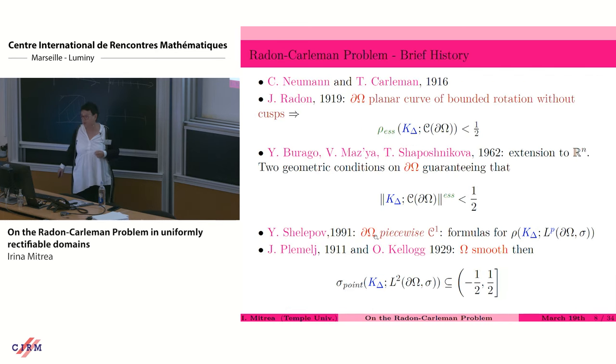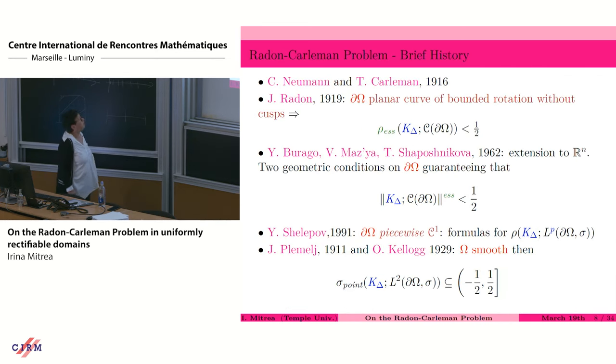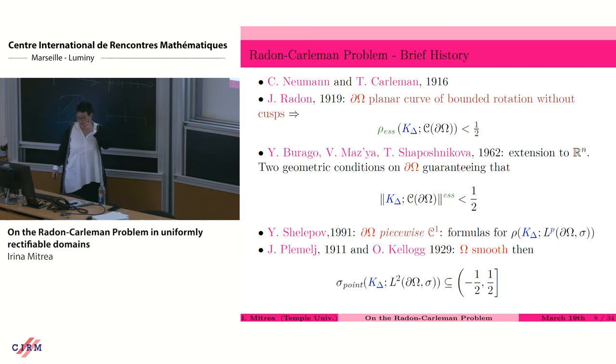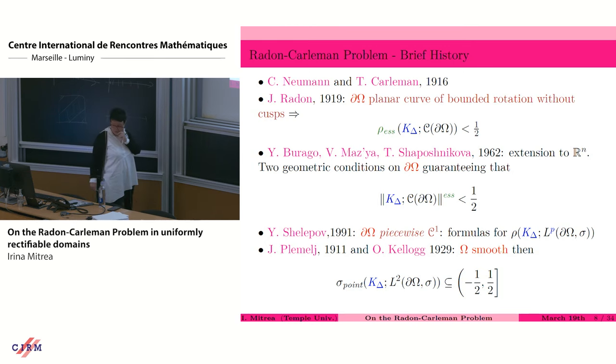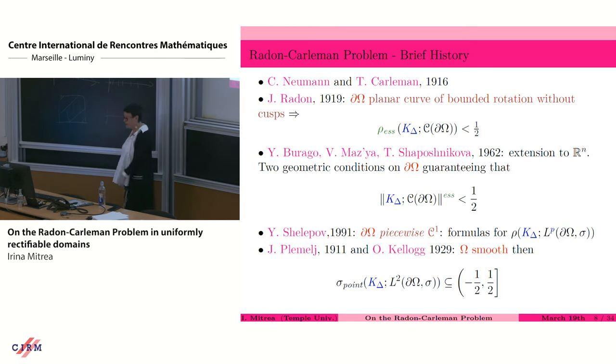The significance is that if the spectral radius is less than a half, then g is going to be one-half identity plus K inverse applied to the Dirichlet data f. When the spectral radius is less than a half, the inverse can be expressed as a convergent Neumann series, ultimately allowing you to obtain an explicit solution of the elliptic PDE in terms of that convergent Neumann series. This goes back to the work of Neumann, Carleman, and Radon.